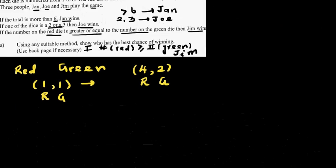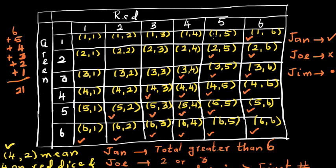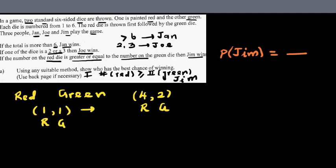So let's go back. You can say the probability of Jan winning is, first, there are how many outcomes? You've got 6 across and 6 down. So you've got total 36 outcomes. Out of them, there are 21 outcomes which makes Jan the winner. So the probability of Jan winning is 21 out of 36.